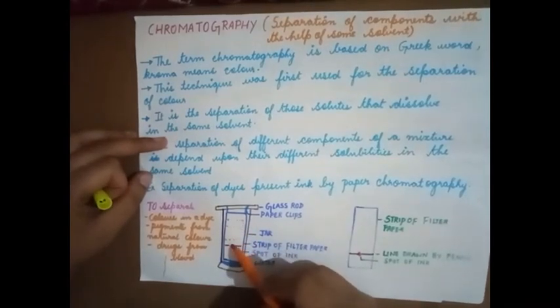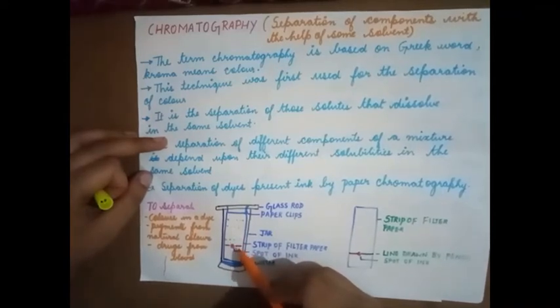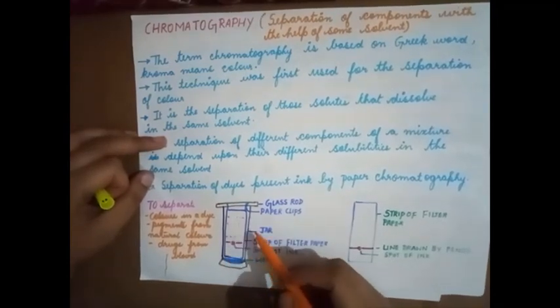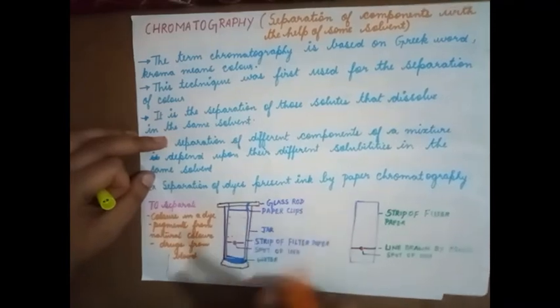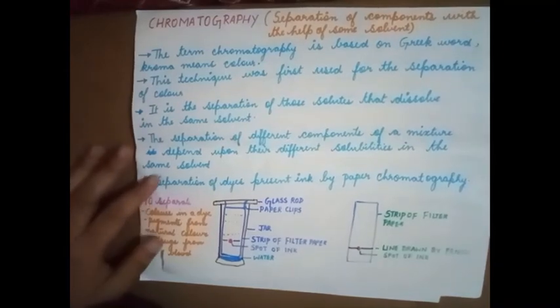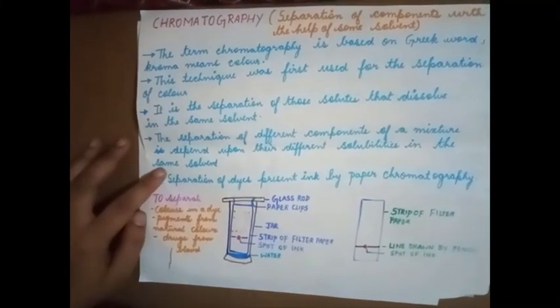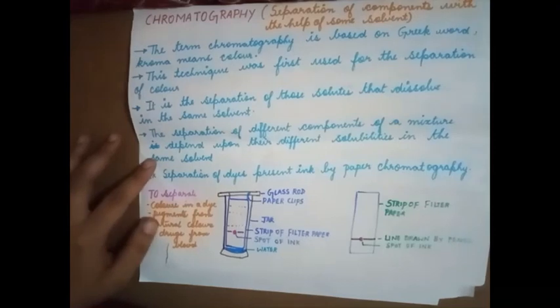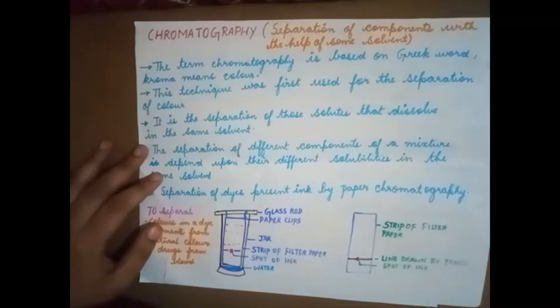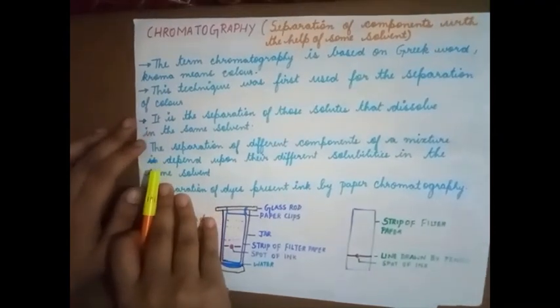Here we see different solutes or different colors are present in this particular dye. All these dyes are soluble in one particular solvent, that is water. Based on their solubility, they are carried at different levels and we obtain different colors. What is the application of this? To separate colors in a dye, pigments from natural colors, it is used to separate drugs from blood. This is the application of chromatography technique and it is a very important technique.